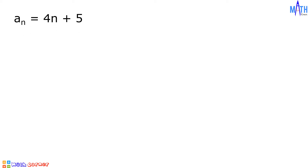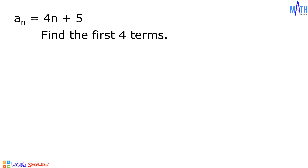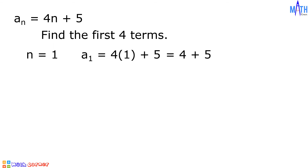Next example: given the general term of the arithmetic sequence, a sub n equals 4n plus 5, let us determine the first 4 terms of this arithmetic sequence. To determine the first term, the value of n is equal to 1. A sub 1 equals 4 times 1 plus 5. Since 4 times 1 is equal to 4, then we have 4 plus 5, which is equal to 9. And the first term is equal to 9.